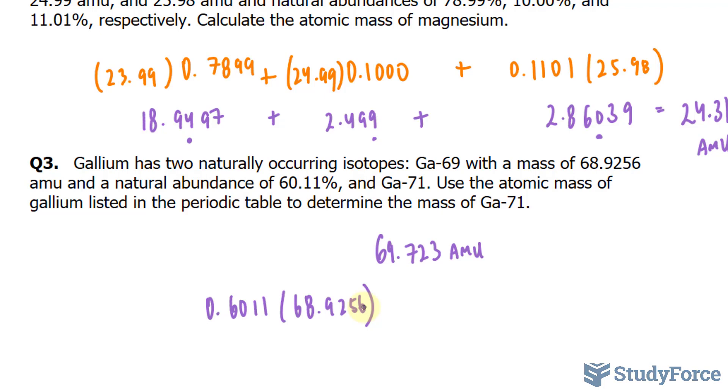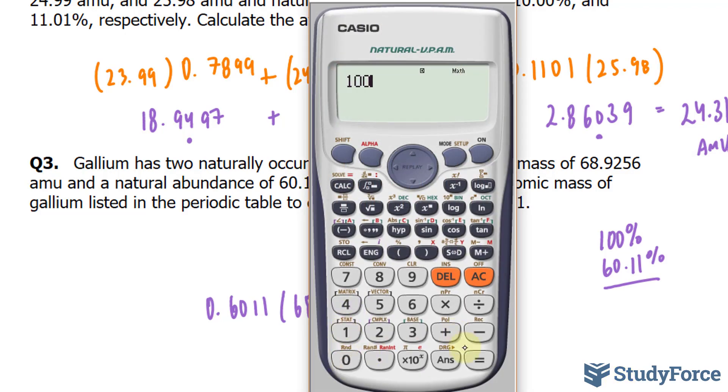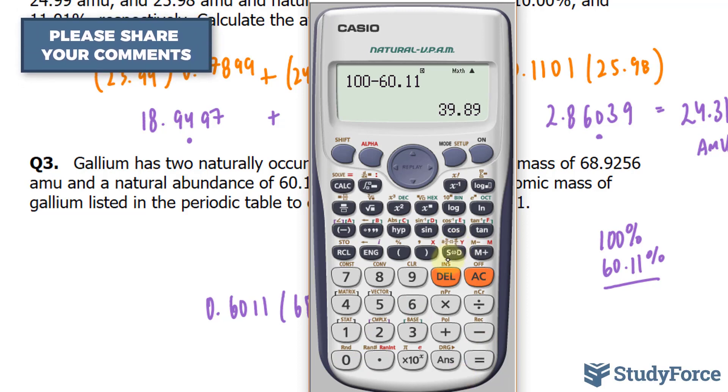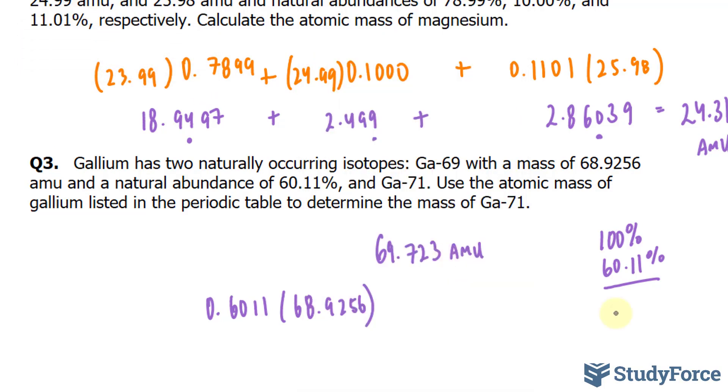We know that since there is 60.11% abundance of gallium-69, the remainder has to be true for gallium-71. Let's find out what 100% minus 60.11% is equal to. This will be the abundance of gallium-71. So 100 minus 60.11 gives us 39.89, and I'll convert this percentage into a decimal the same way I did for the other one. I end up with 0.3989.